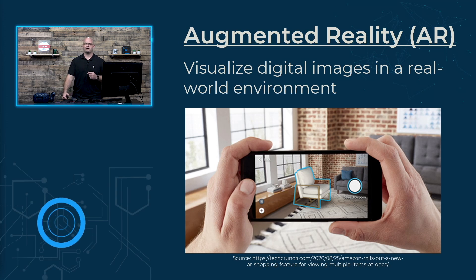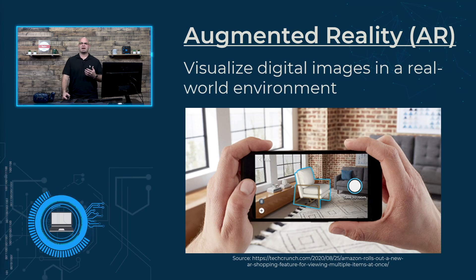Augmented reality, or AR, allows you to visualize how objects might look in a real-world environment. For example, it can help you see how a piece of furniture would fit into a specific space, maybe a couch into your living room. Think of some of the modern apps today, like Snapchat or any other social media platform where you can put a cat on your head with one of the filters. Those are augmented reality, and that allows you to see something you maybe wouldn't ordinarily see.